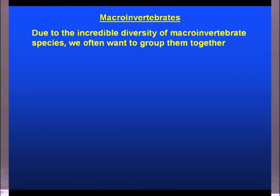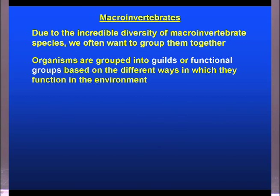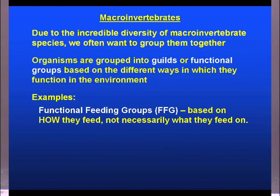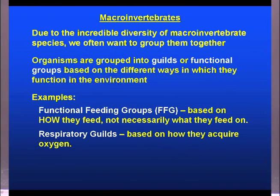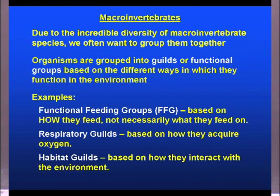Due to the incredible diversity of all the different types of macroinvertebrates, one of the things we like to do is group them into smaller groups so that we can better deal with this diversity. The easiest way is based on guilds or functional groups — grouping things based on similarities in the way they interact with their environment or the way they eat. I'll give you three primary examples: functional feeding groups, respiratory guilds, and habitat guilds.